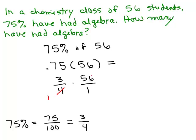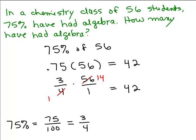So 4 goes into 56, well 2 goes into 56, 28 and then I just divide by 2 again. I'm going to get 14 and 3 times 14 is 42. If you get out a calculator and you do 0.75 times 56, you should also have gotten 42. So this means the answer is 42 students have had algebra.